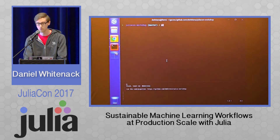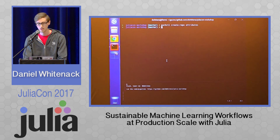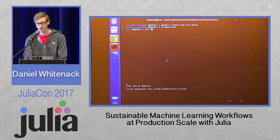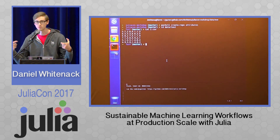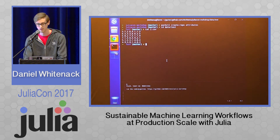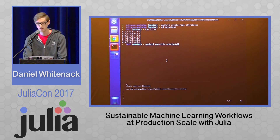Now let's create another repository of data called 'attributes'. What I'm going to put in there are some files that I want to infer off of — new collections of attributes that I want to predict from. I'm going to put those into my attributes repo on the master branch all at once.